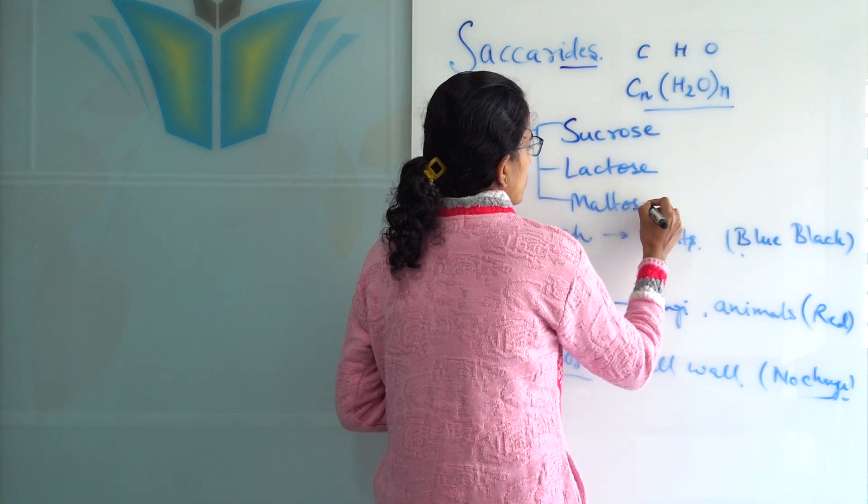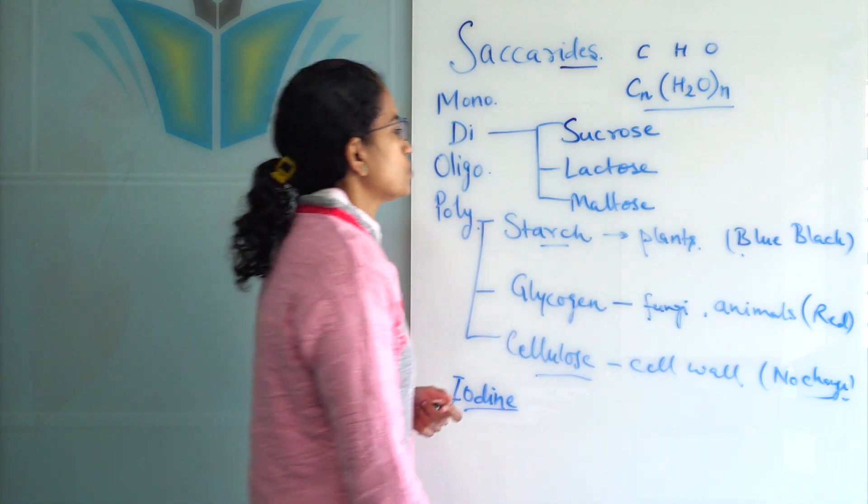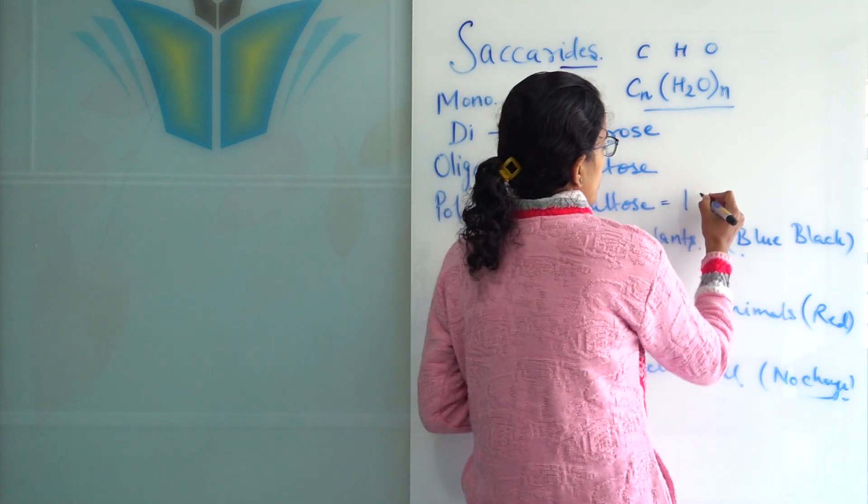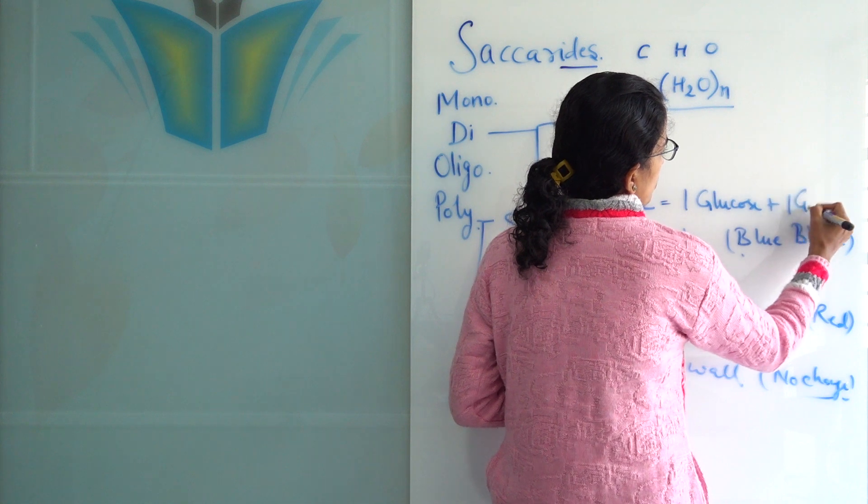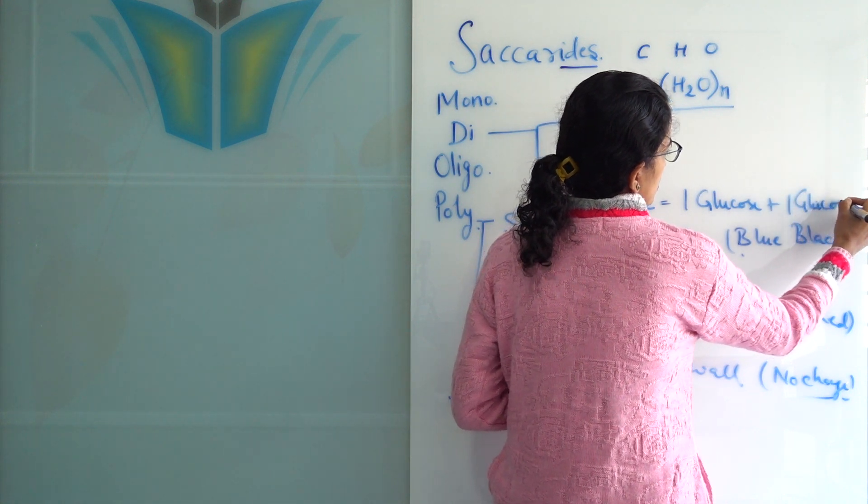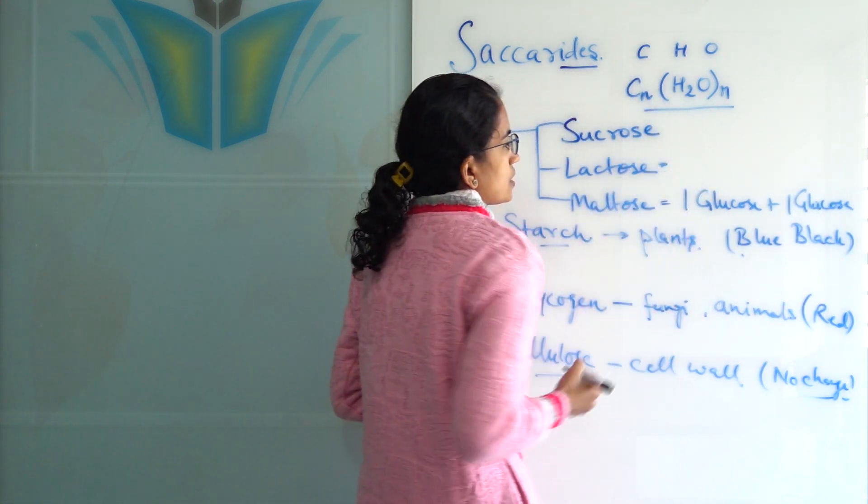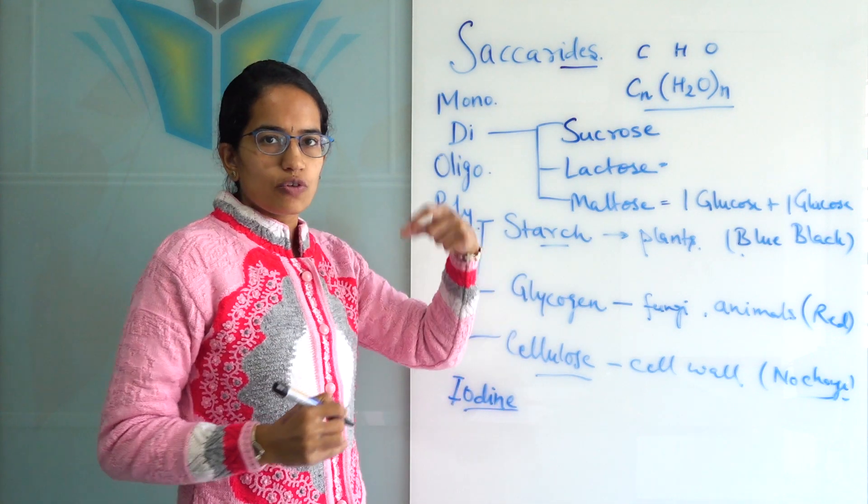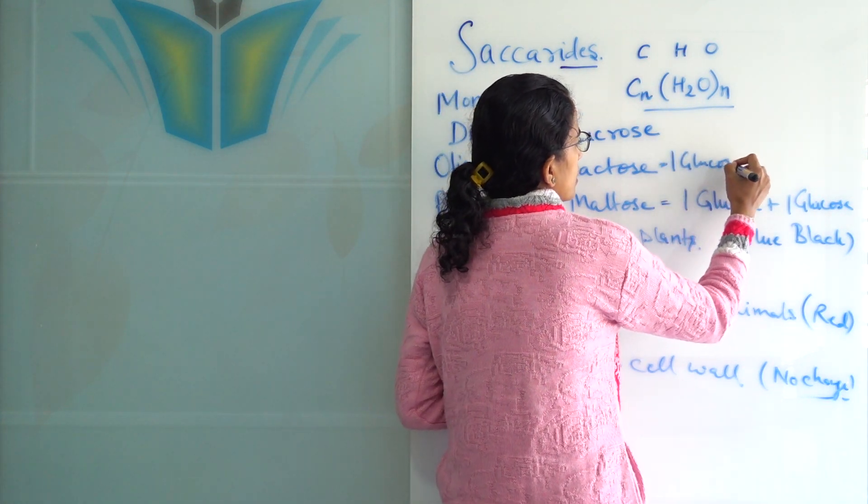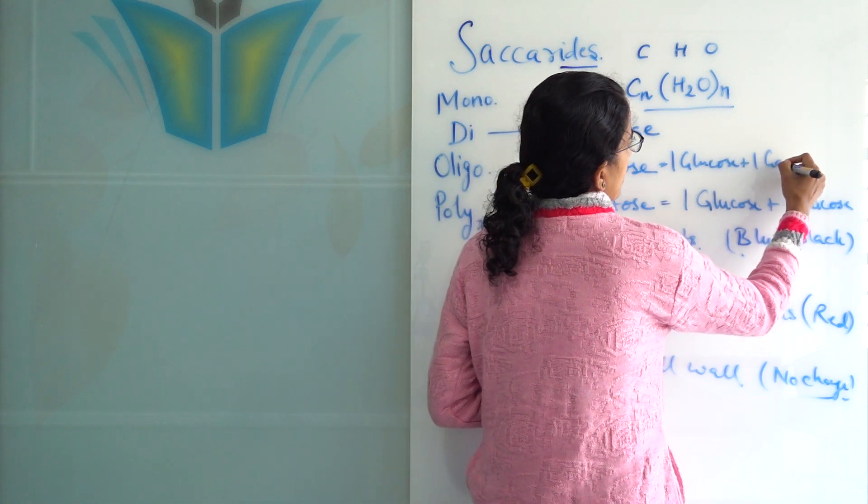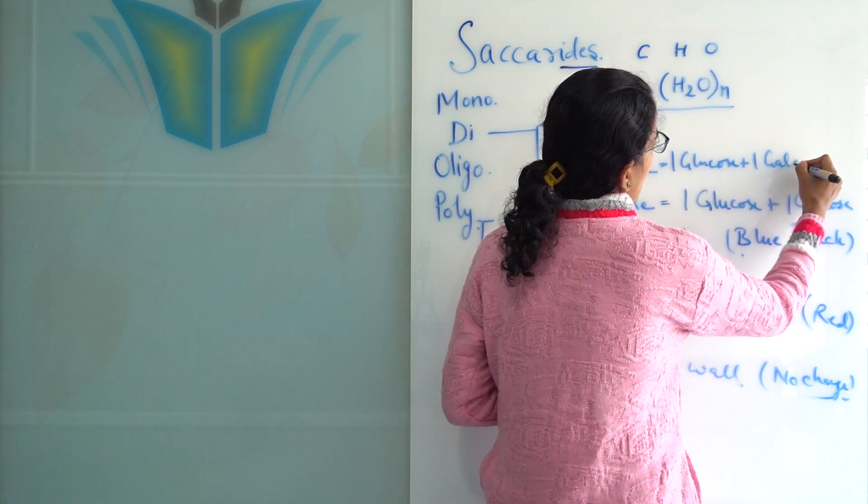Now, how do we remember how they are composed of? So, maltose is composed of one glucose plus one glucose. Lactose definitely is comprised of glucose plus galactose. So, galactose is the subunit or it is found by breaking of lactose. So, we have galactose.